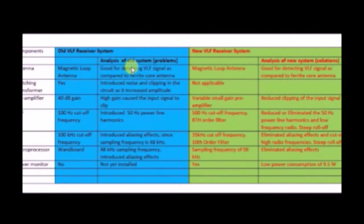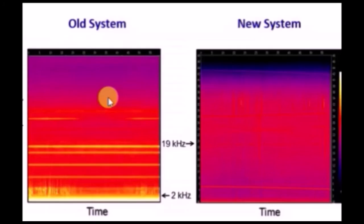This table shows the analysis of the old VLF system and the new VLF system. These are the results that were depicted from the new system and these are the flaws that were shown in the old system. These are the measured results. The old system suffers from a lot of noise and harmonics.